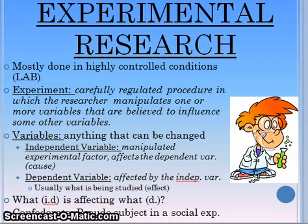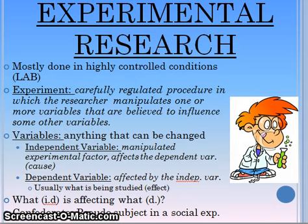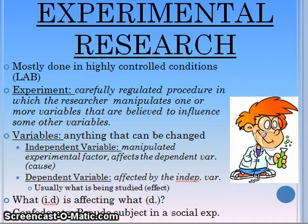In the last video I briefly went over what experimental research is. It is done in highly controlled conditions such as a laboratory, and I want to look at the variables. A variable is anything that can and will be changed in an experiment. We have the independent variable — the IV is what is changed, what is manipulated in the experiment, and the independent variable is what is going to affect the dependent variable. The dependent variable is what is affected by the independent variable, and it usually is what is being studied, which is the effect.